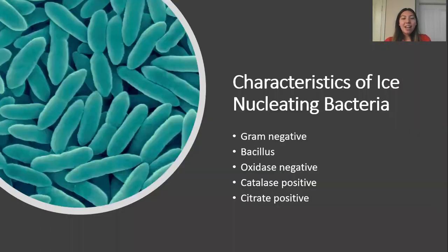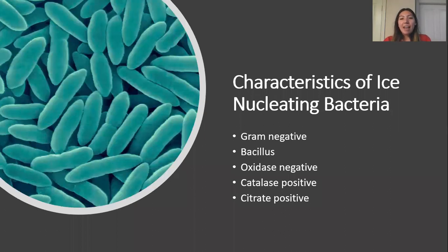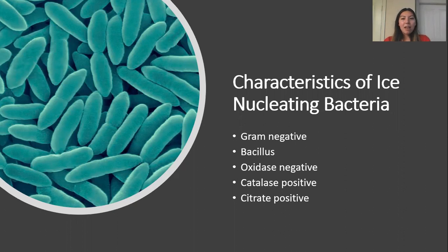Now let's discuss some of the common characteristics of ice nucleating bacteria. Most of these bacteria are gram negative and have a bacillus shape, although some strains can have a coccus shape. They are generally oxidase negative, meaning that they do not have the cytochrome C oxidase enzyme. They are catalase positive, which means they do have the enzyme catalase, and they are able to convert oxygen radicals into a less toxic form.